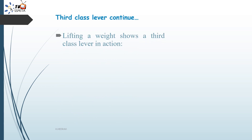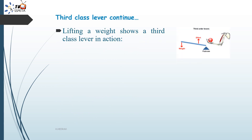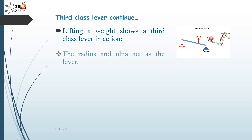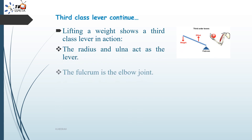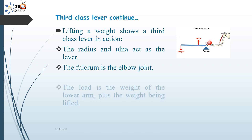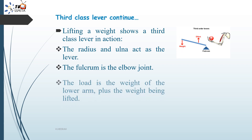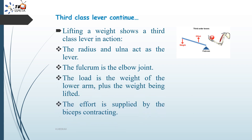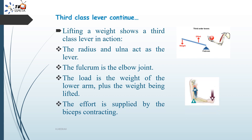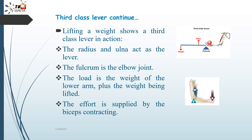For example, lifting a weight shows a third class lever in action, where the radius and ulna act as the lever. The fulcrum is the elbow joint, the load is the weight of the lower arm plus the weight being lifted, and the effort is supplied by the biceps contraction.